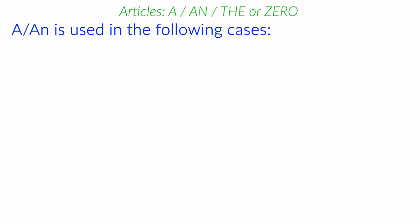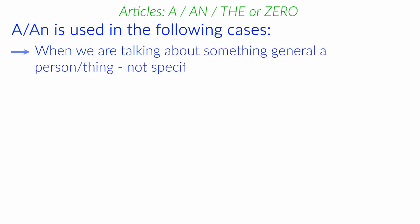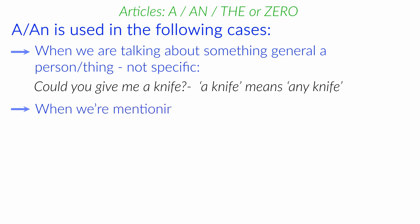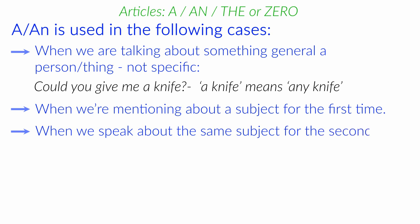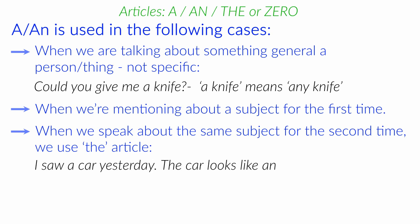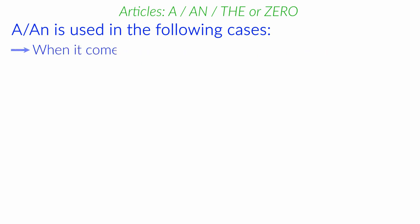The indefinite article is used in the following cases. When we are talking about something general, a person, thing, not specific. Could you give me a knife? A knife means any knife. When we are mentioning about a subject for the first time, but when we speak about the same subject for the second time, we use the article. For example, I saw a car yesterday. The car looks like an old school model. When it comes to professions, for example, He is a musician. My brother is a car mechanic.